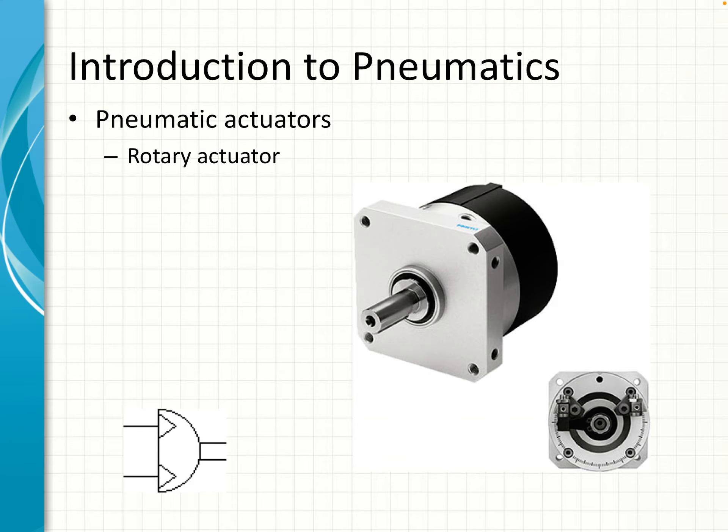A rotary actuator is different to a motor in that it doesn't continuously rotate — it just rotates at a certain angle and then stops and rotates back. It's typically used to switch valves in a pipeline on and off.